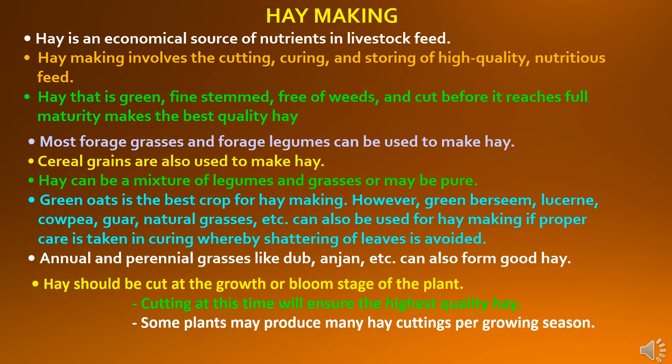Hay is an economical source of nutrients in livestock feed. Hay making involves the cutting, curing and storing of high quality nutritious feed. Hay that is green, fine stemmed, free of weeds and cut before it reaches full maturity makes the best quality hay. Most forage grasses and forage legumes can be used to make hay. Cereal grains are also used to make hay. Hay can be a mixture of legumes and grasses or may be pure. Green oats is the best crop for hay making. However, green barseem, lucerne, cowpea, guar, natural grasses etc. can also be used for hay making if proper care is taken in curing whereby shattering of leaves is avoided.